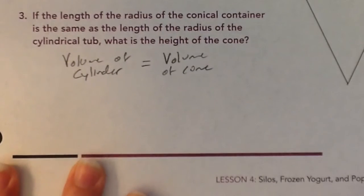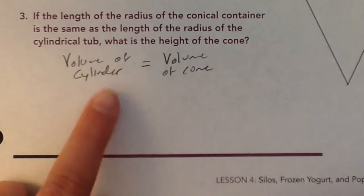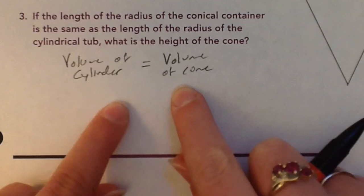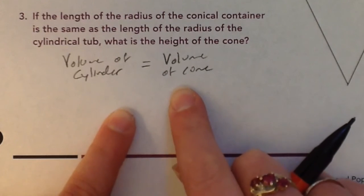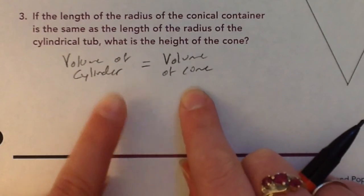Basically asking, what dimensions do we need to use in order for a cylinder to equal the same as a cone? Now, not all the dimensions can be the same, because we know that a cone is 1 third of a cylinder.